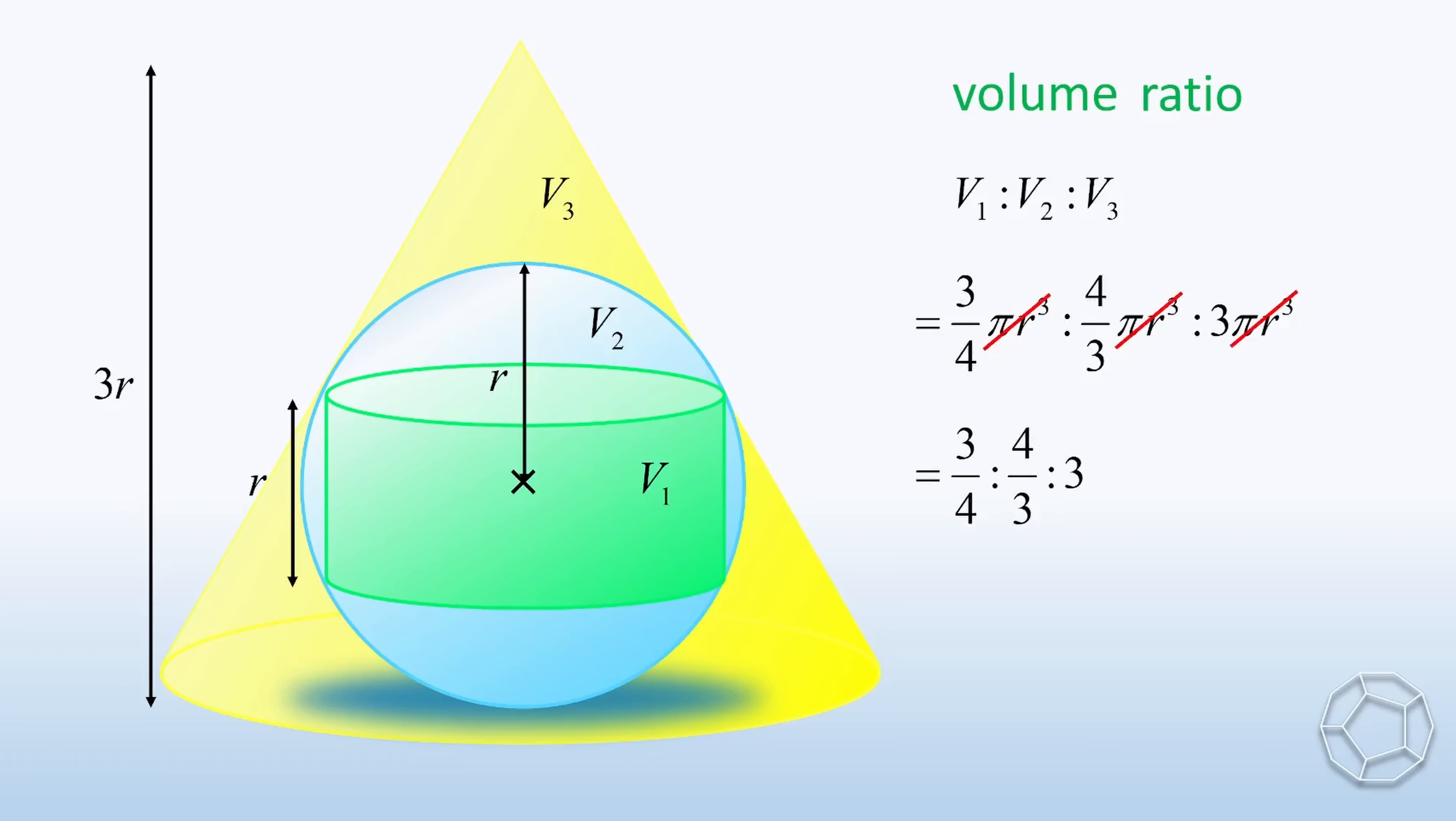To get rid of the fractions, we multiply each term by 12. After simplification, we get the required ratio. It is equal to 9 to 16 to 36.